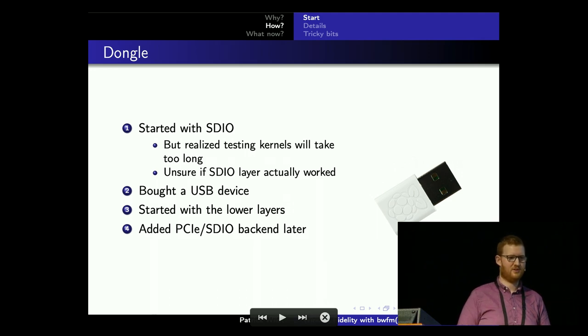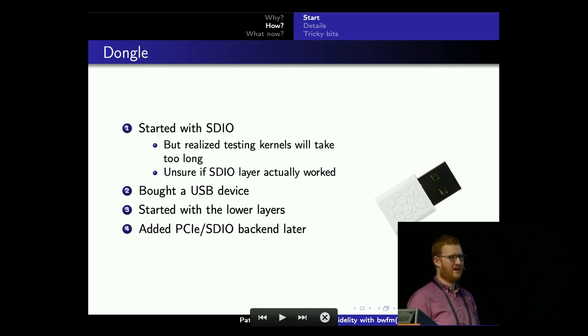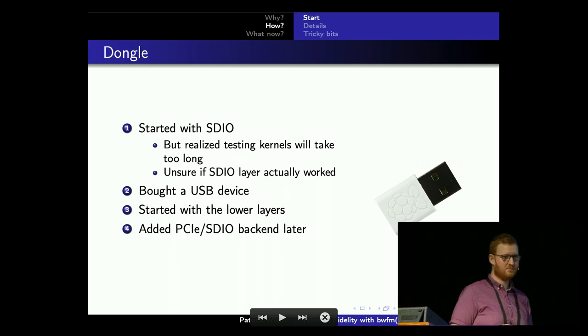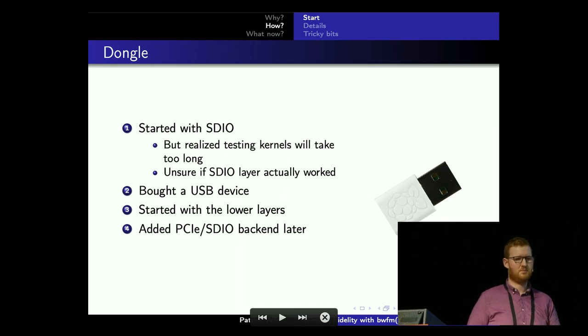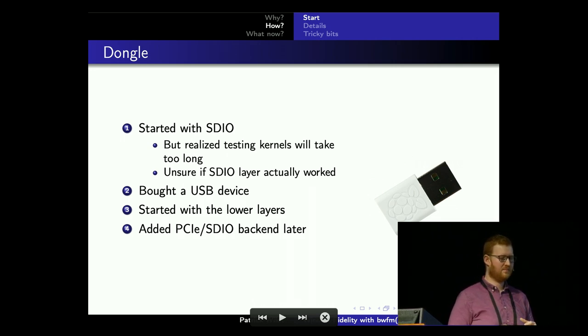I started with SDIO because that was the first hardware I had — the Intel hardware — but realized testing would be too slow. I only had a 40-inch TV as a monitor and the Intel machine had no serial, so I was sitting on my couch looking at a big TV with dmesg. So I bought a USB device — the official Raspberry Pi USB dongle — because at that time when they produced it, the Raspberry Pi didn't have built-in WiFi and since it's a Broadcom chipset, they used Broadcom WiFi. I built the lower layers first, then added the top layers, PCI Express, and SDIO backend later.